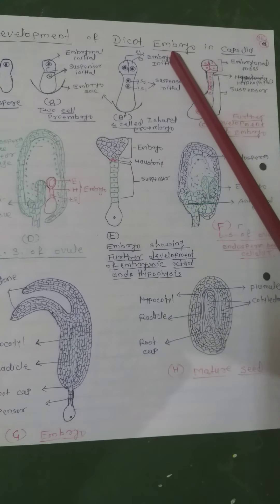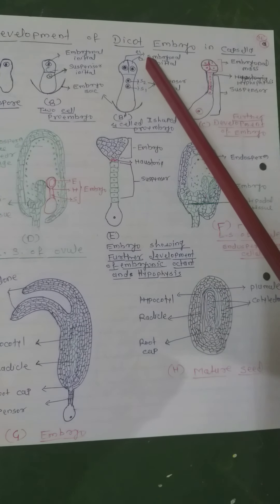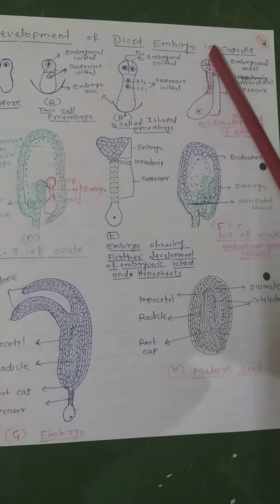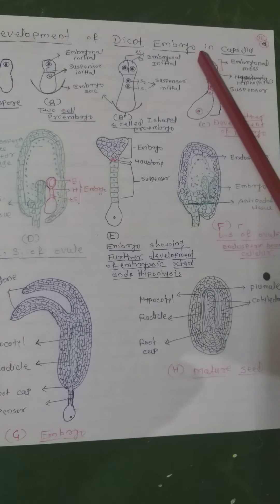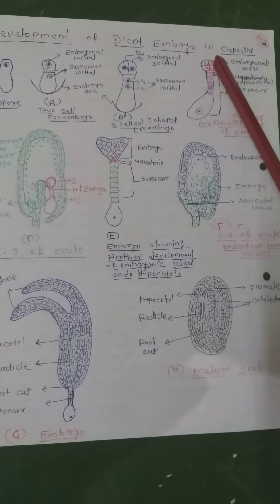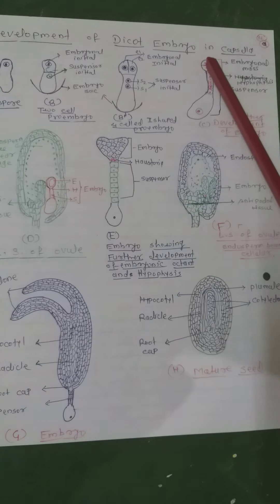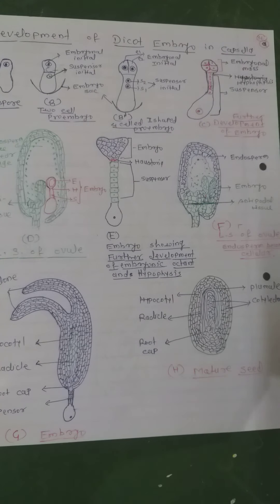The embryonal initial cell undergoes three successive mitotic divisions to form eight cells, known as the octant stage. These four cells are basal and the upper four cells are the upper tier. The planes of division are at right angles to each other. The lower tier of four cells gives rise to the hypocotyl and radicle, while the four cells of the upper tier form the plumule and one or two cotyledons.